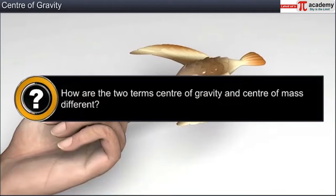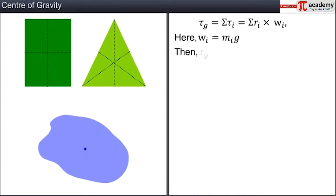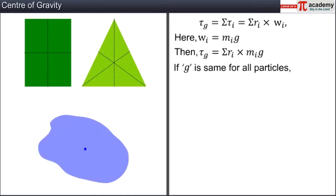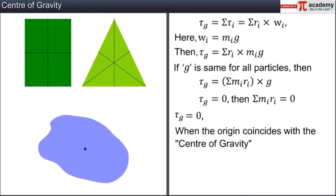How are the two terms center of gravity and center of mass different? In the equation tau_G equals sigma tau_i equals sigma ri cross wi, wi is the weight of the ith particle and equals mi times g. Then tau_G equals sigma ri cross mi·g. If g is the same for all particles, then tau_G equals sigma mi·ri cross g. That means if tau_G equals zero, then sigma mi·ri is also equal to zero. tau_G equals zero only when the origin coincides with the center of gravity.